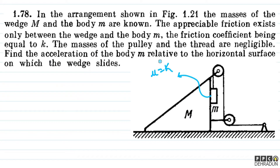Humse puchha gaya hai acceleration of the body m relative to the horizontal surface — kehne ka matlab hai ki humare ko nikalna hai acceleration of the body small m with respect to ground. To bachon, agar hum log is diagram ko dekhe, to small m ka motion bahut hi complicated hai — woh niche bhi ja raha hai, aur saath hi saath, jaisay jaisay woh niche jayega, capital M right ki taraf jayega. Constraint relation ki wajah se small m ko aage bhi jana padega.